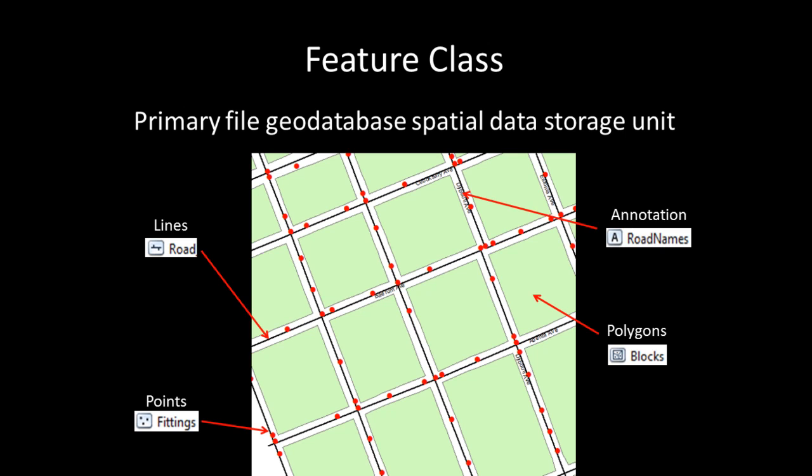Note how the symbol for a feature class reflects the feature class's geometry — for example, a series of three points for a point feature class.